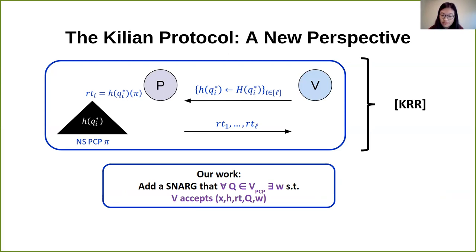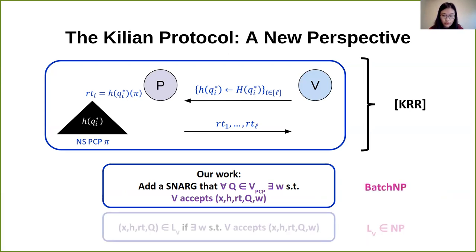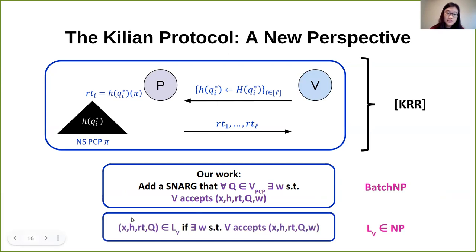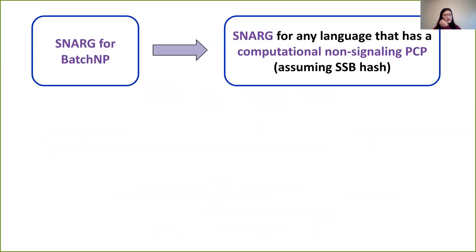We note that this is precisely a batch NP statement: for all Q — for many possible values of Q — there exists a witness W such that the verifier accepts. This is a batch NP statement for language LV, where an instance (x, H_root, Q) is in LV if there exist answers and openings such that the verifier would accept.